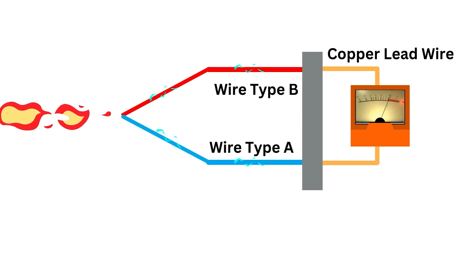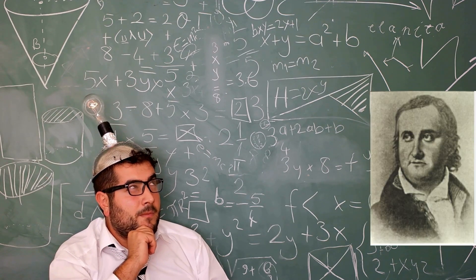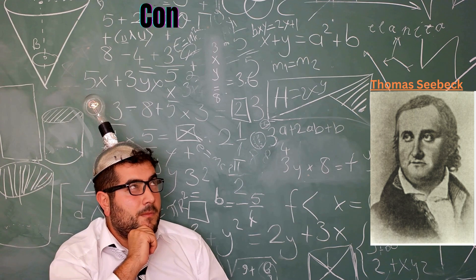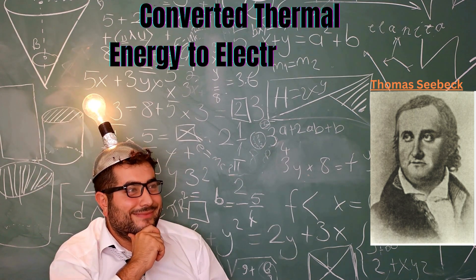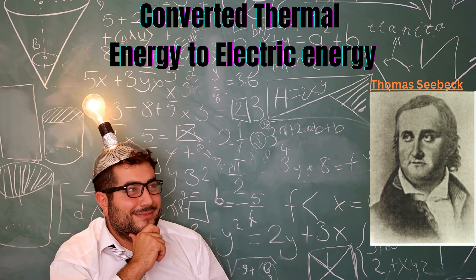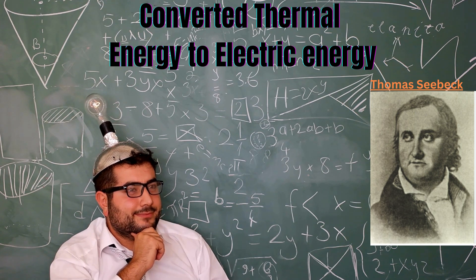What is the Seebeck Effect? In the 1800s, Thomas Seebeck was trying to make electricity from heat and he experimented with a circuit of bismuth, copper, and bismuth antimony, converting thermal energy to electric energy. Electricity flows from hot to cold. The greater the difference in temperature, the greater the voltage.